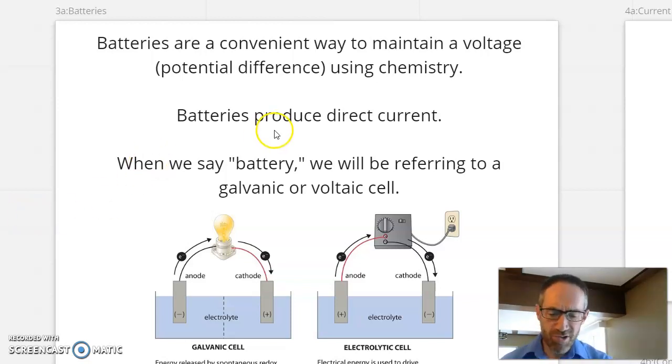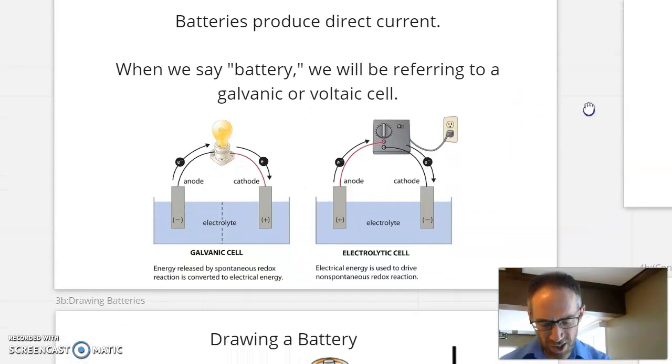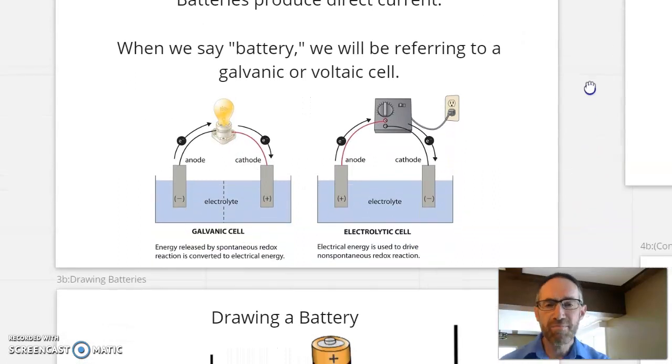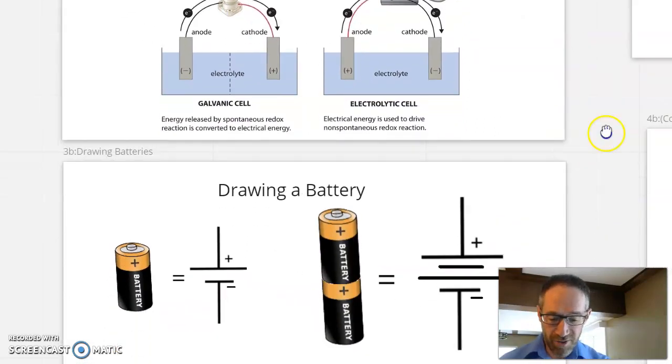Batteries are going to produce direct current, and they're going to do that by using some internal chemistry that your chemistry teacher has or will teach you about. When we say a battery, we're referring to a galvanic or a voltaic cell—something that uses an oxidation-reduction reaction to produce a voltage. There's a thing called an electrolytic cell, but that makes the current flow the other direction.